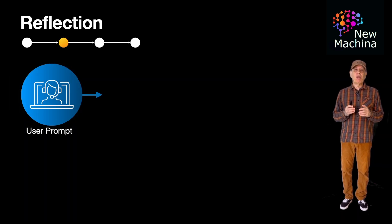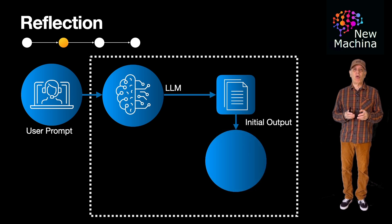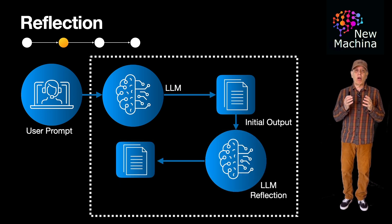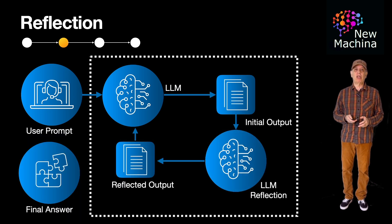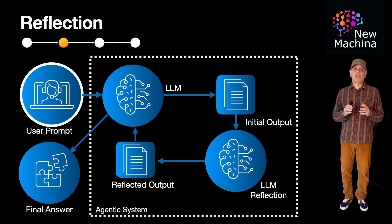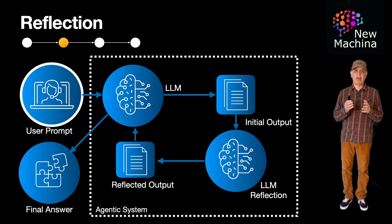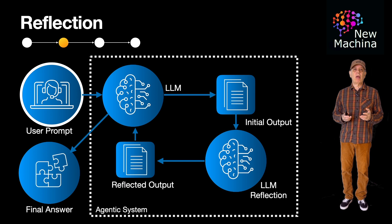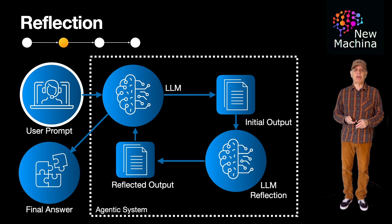So let's look at a typical user in action with an agentic workflow using reflection. A user provides an initial prompt such as a problem to solve, a plan to generate, or a piece of text to analyze. As an example: please summarize this article, or create a plan to launch a new product.